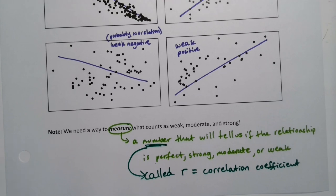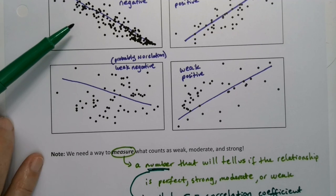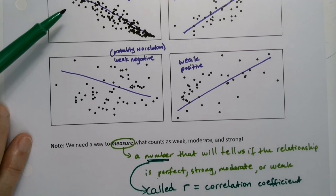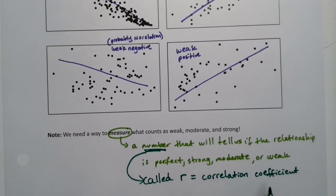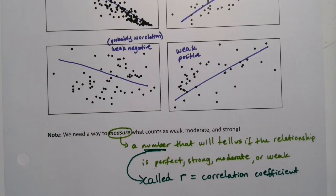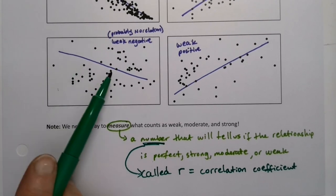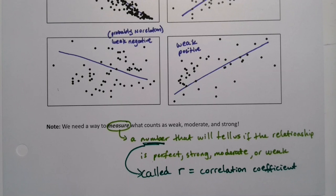But for right now, just realize that r is going to be able to tell us without us having to guess whether this is in fact strong or if it's moderate. That correlation coefficient, that number, will be able to tell us strong, moderate, and weak and all of that stuff. It'll actually also tell us direction, positive or negative as well. Won't that be nice? And then you won't have to wonder about this bottom one, whether it's positive or negative, because r will tell us.